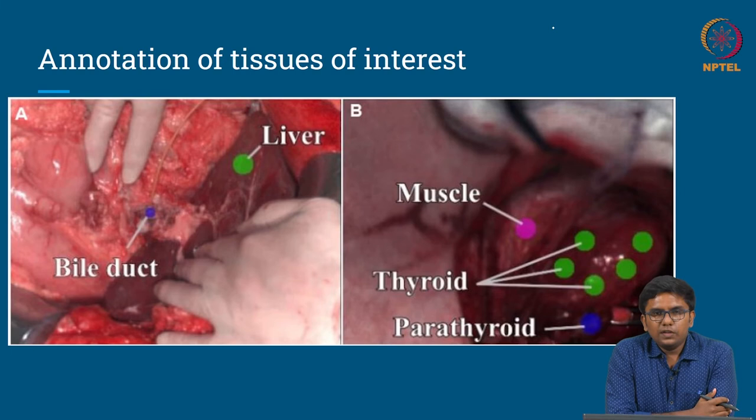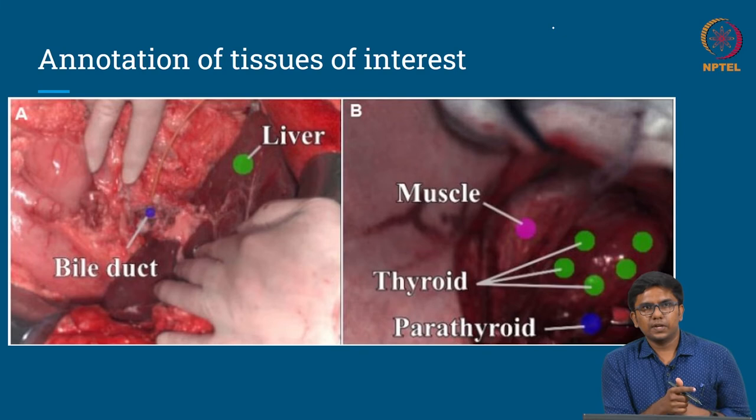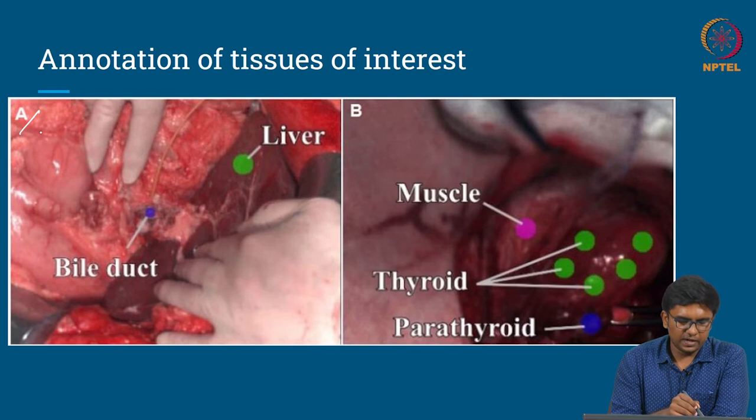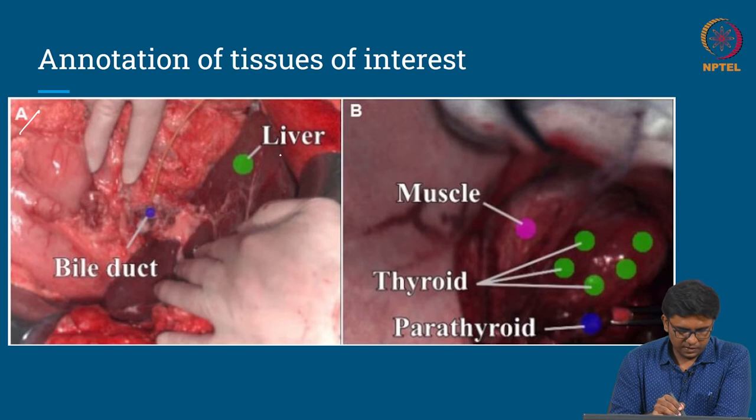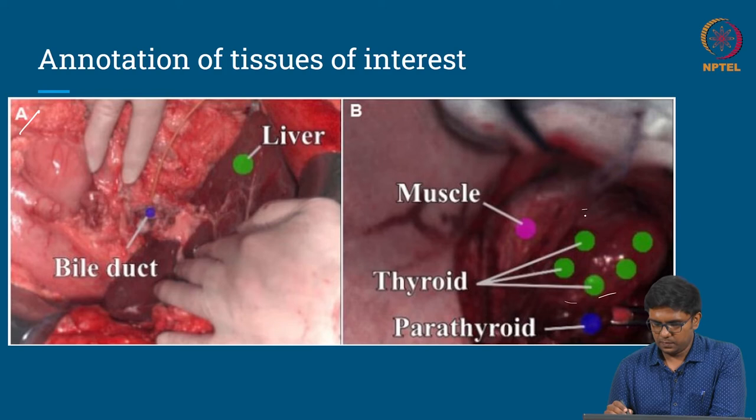The hyperspectral image data collected is shown here. Picture A shows where the liver and bile duct are. Surgeons are involved in annotation of this data — not full semantic segmentation or complete manual annotation, but just labeling: this part is liver, and this is where the bile duct lies. For the thyroid surgery, the entire thyroid gland is shown, the neck muscles are shown, and this is where the parathyroid gland lies.